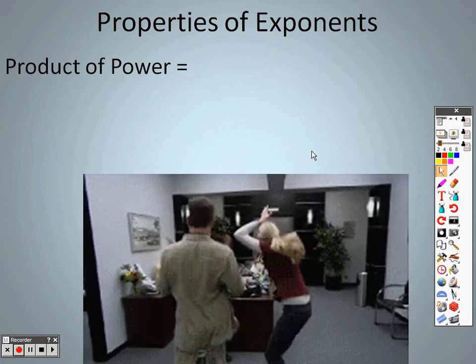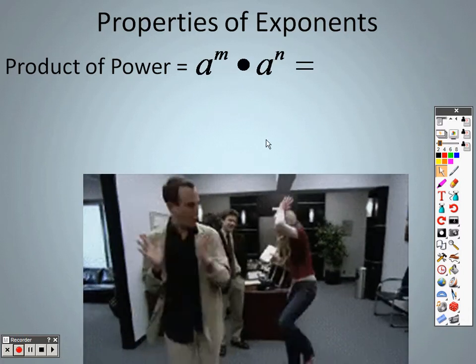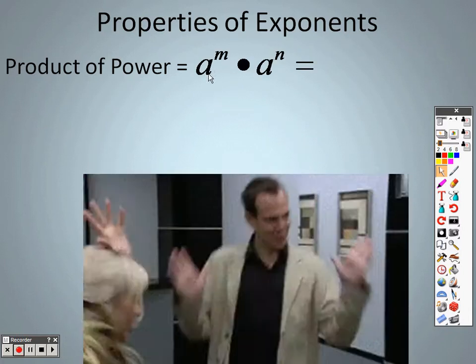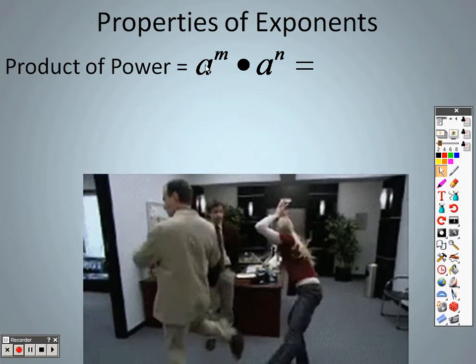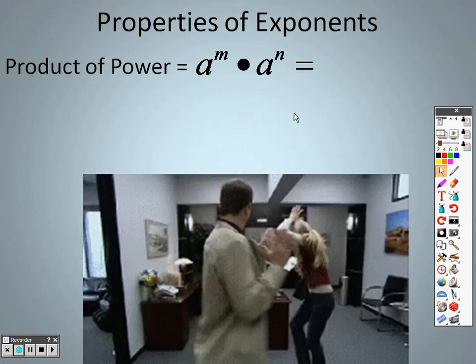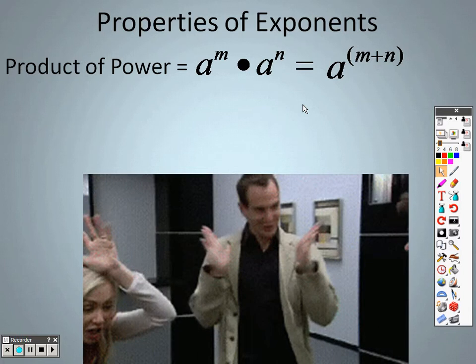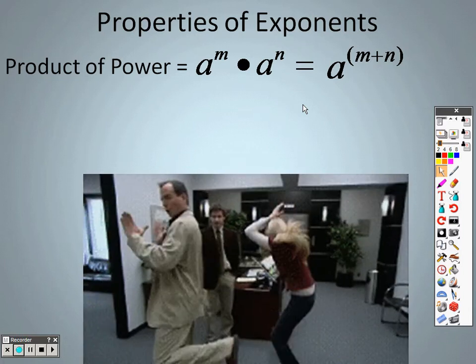The first property that we have is the product of power property. What this is basically saying is if you have the same base of a, and you have exponents that are the same, all you're going to do is add them together.